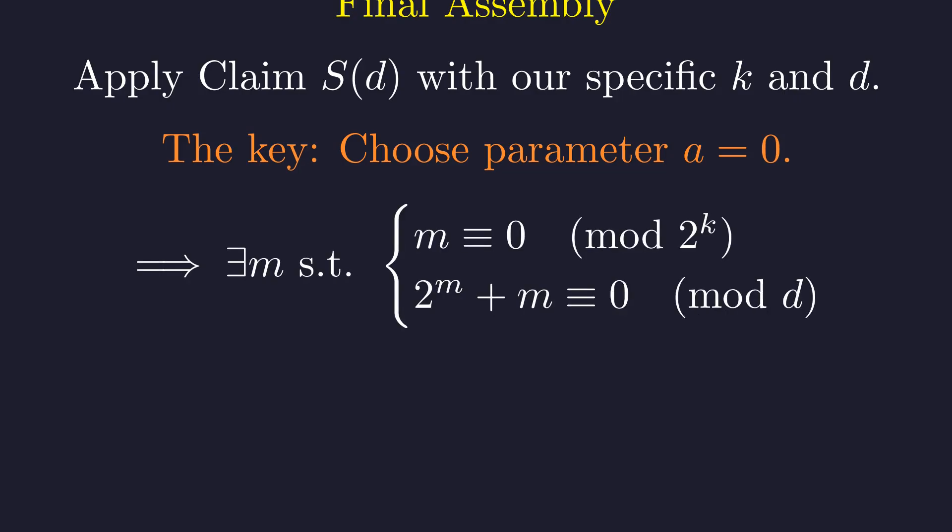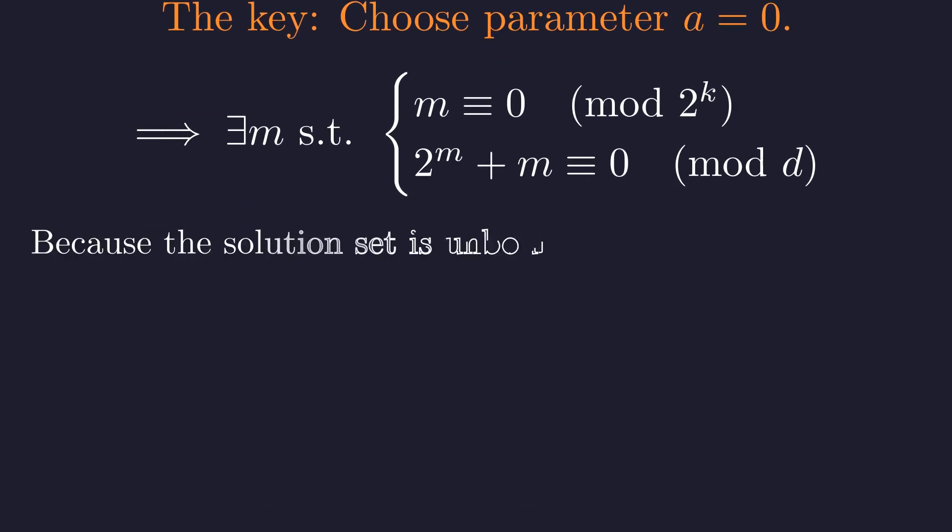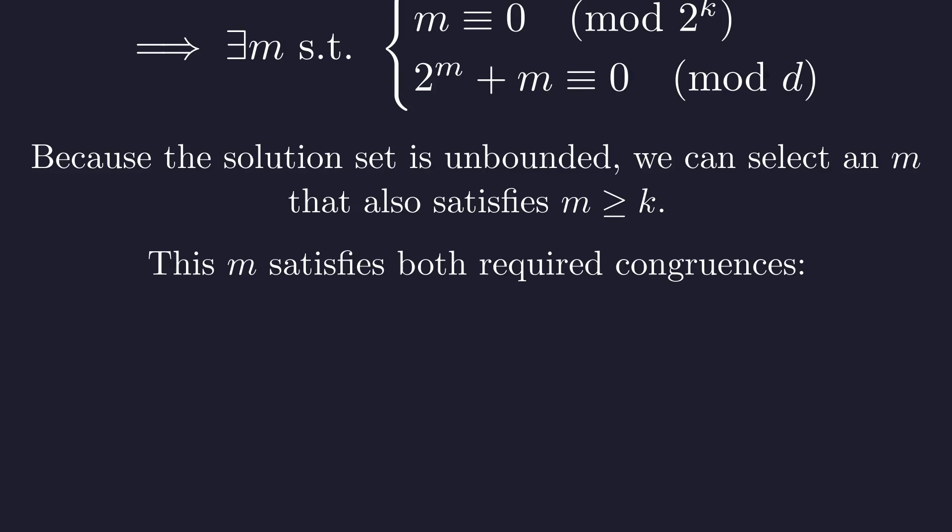The claim now guarantees an m that is a multiple of 2 to the k, and also solves the congruence for d. Now we use the unboundedness property. We are guaranteed to find a solution m from this infinite set that is also greater than or equal to k. This single value of m now satisfies all our original conditions.